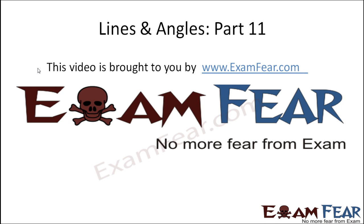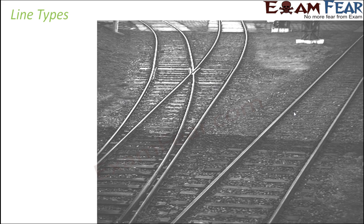Hello friends, this video on lines and angles part 11 is brought to you by examfear.com. No more fear from exam. So now that we have discussed about so many different types of angles, it is time to talk about types of lines. We will not talk about individual lines, rather we will talk about pairs of lines. The two common types of lines we will talk about are parallel lines and intersecting lines.